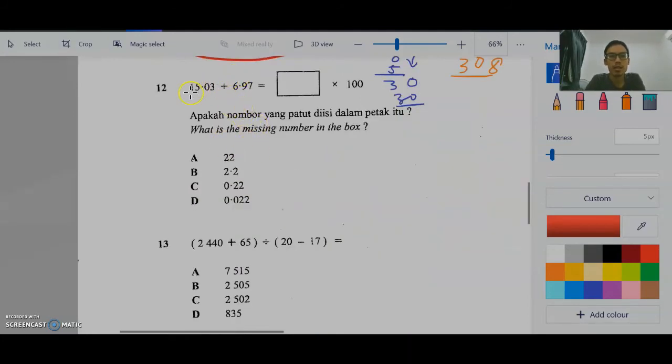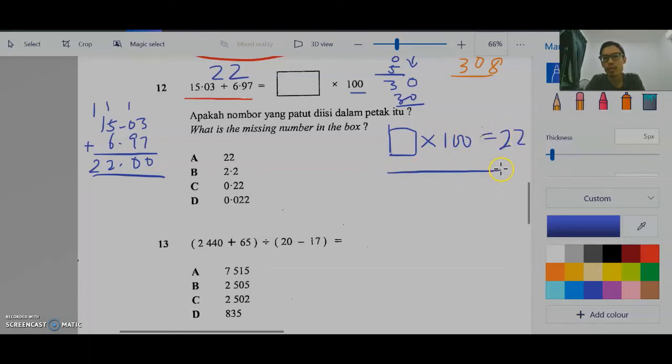What is the missing number in the box? We plus this first. Tambahkan ini dulu. So, 15.05 tambahkan 6.97. Tambahkan, tambahkan, tambahkan, tambah. So, belah kiri adalah 22. So, 22 sama dengan apa darab 100. Ataupun, apa darab 100 ialah 22. So, kiri ke kanan ialah darab kan? So, sekarang kita buat kanan ke kiri. Terbalikkan darab jadi bahagi. So, 22 bahagi 100. So, titik bahagi gerak ke kiri titik 2 kali sebab 2 kosong. Sekali 2 kali titik tambah kosong di depan. Jawapan dia 0.22.